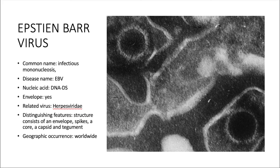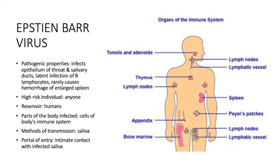Geographic occurrence would be worldwide. Pathogenic properties: it infects the epithelium of the throat and salivary ducts, its lengthened infection of B lymphocytes, and rarely causes hemorrhage of an enlarged spleen.